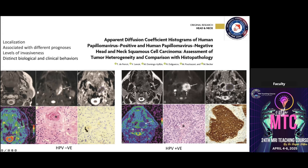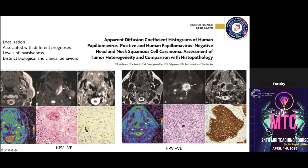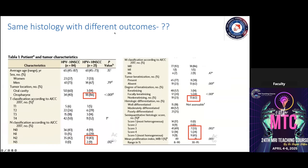Tongue tumors extending into the tonsillar region are mostly HPV-negative with different ADC values, whereas tumors with tonsillar predominance and extension into surrounding organs are more likely to be HPV-positive, with different sensitivity to chemotherapy and radiotherapy. Same histology — squamous cell carcinoma — will have different outcomes depending on location: oral cavity versus oropharynx.